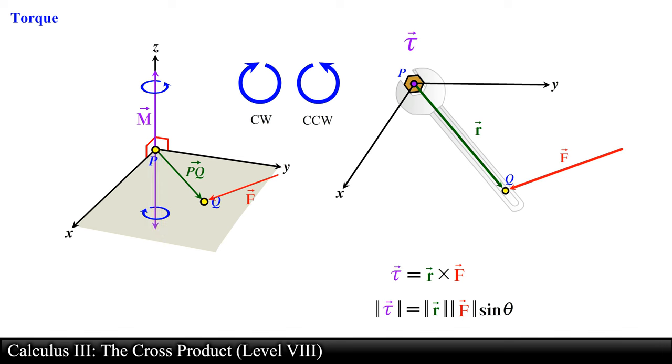By convention, we usually assign counterclockwise rotations to be positive torques or have positive sense, and clockwise rotations are considered to be negative torques, those that have negative sense. This is the same convention that we use when measuring angles in standard positions.